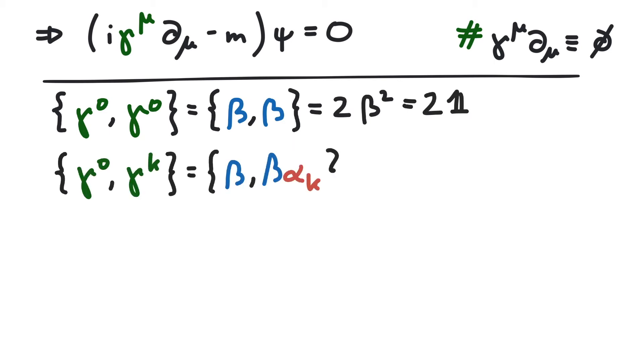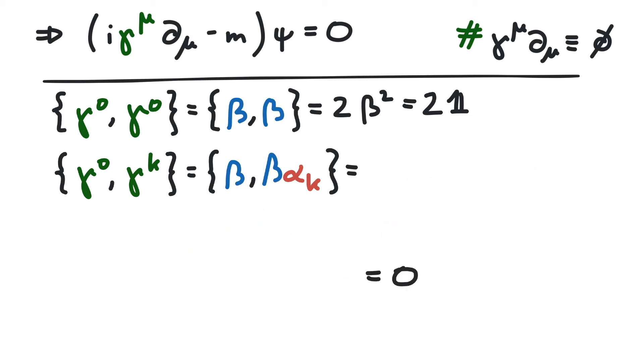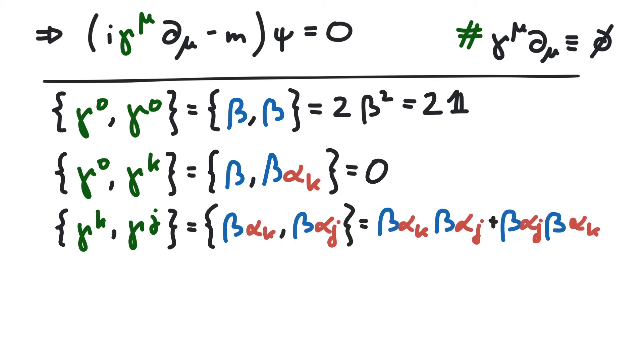For gamma zero with gamma k, we use the anticommutator relation between alpha and beta. And for gamma k with gamma j, we first use the anticommutator relation between alpha and beta to switch out two pairs of alphas and betas while picking up a minus sign.